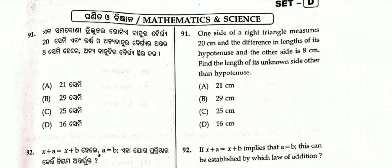One side of a right-angled triangle measures 20 cm and the difference in the length of its hypotenuse and the other side is 8 cm. Find the length of its one side other than hypotenuse.